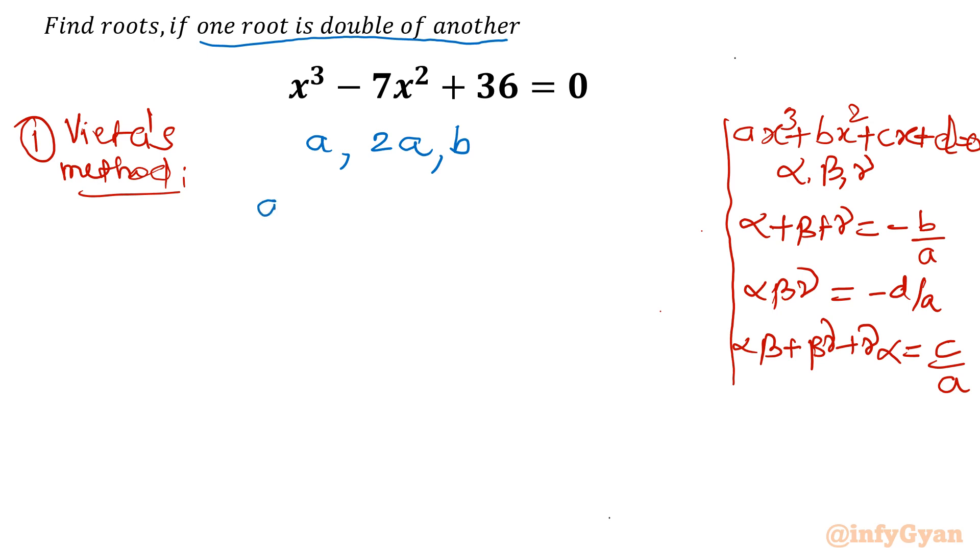Now sum of roots: a + 2a + b = -b/a, which equals 7 (from -(-7)/1). So the first equation I will frame is 3a + b = 7. This is equation number one.